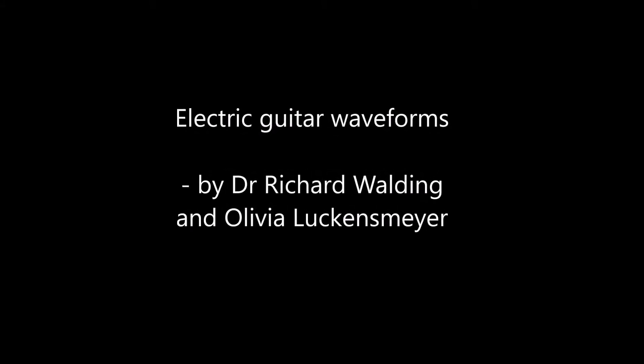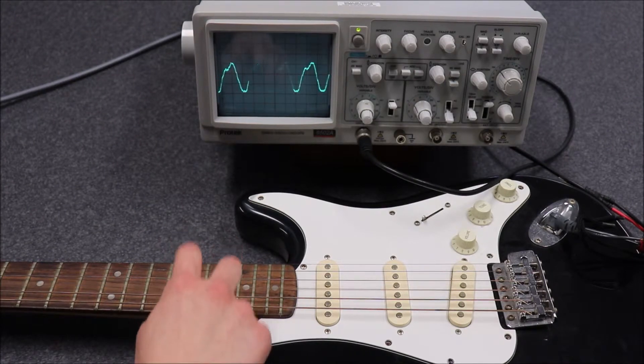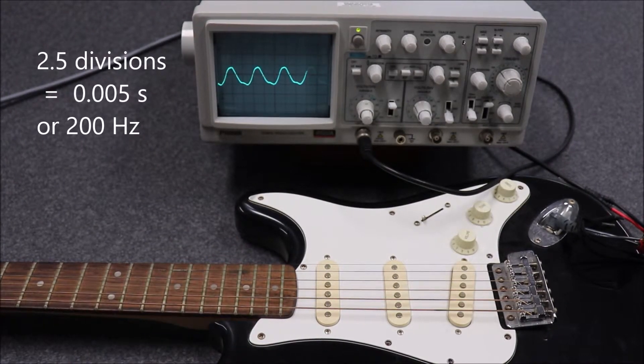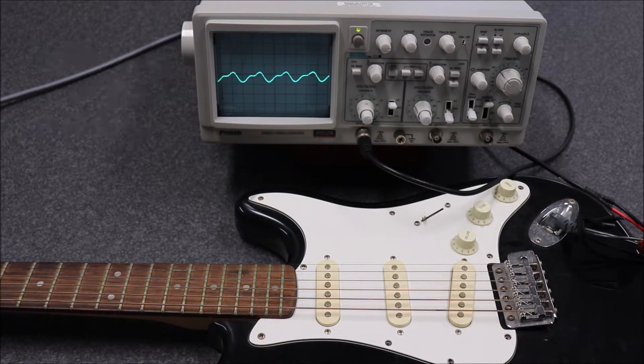In this video we're going to look at the two different ways of plucking a guitar string. First, Olivia plucks it parallel to the body of the guitar and you'll see it's about 2.5 centimeters per peak, about 200 Hertz.